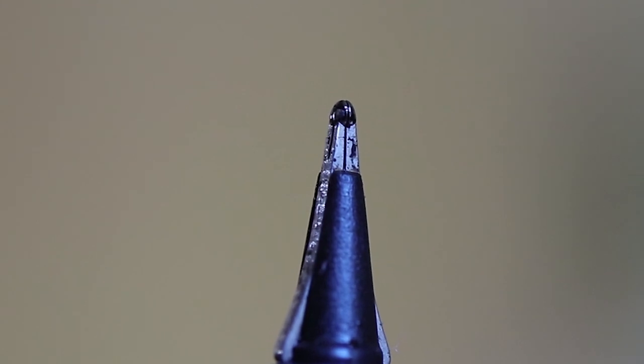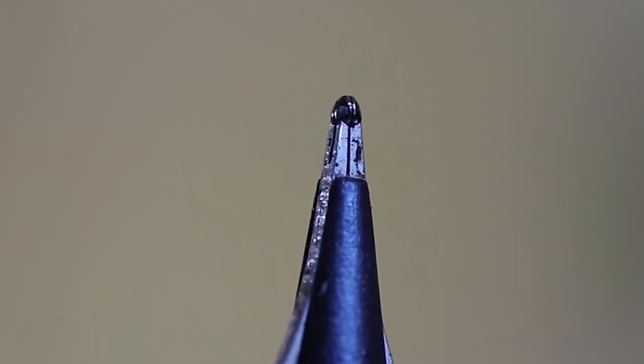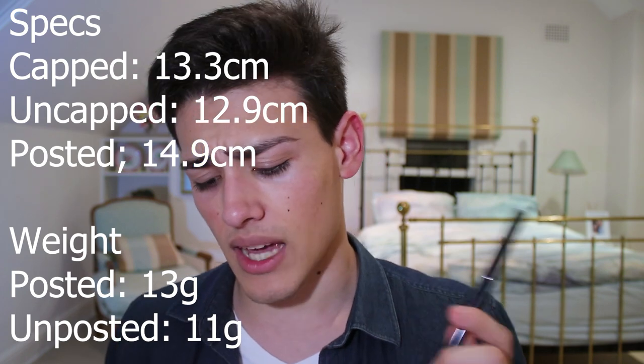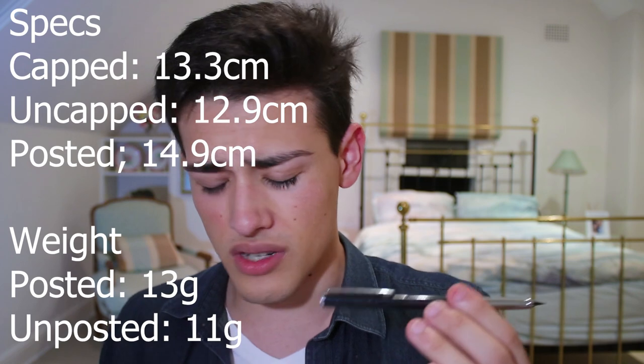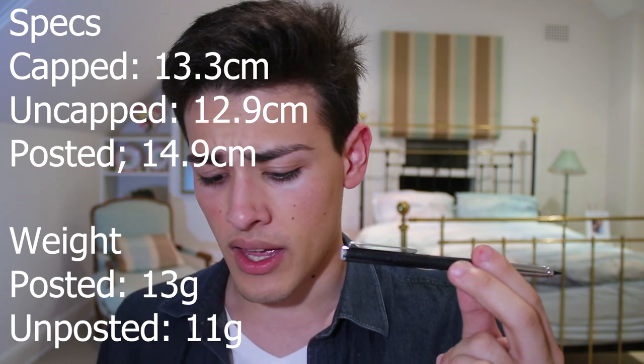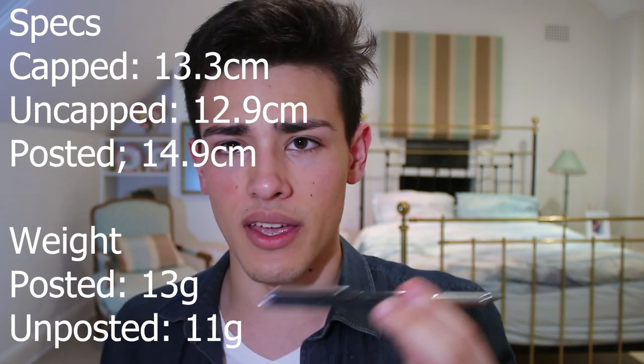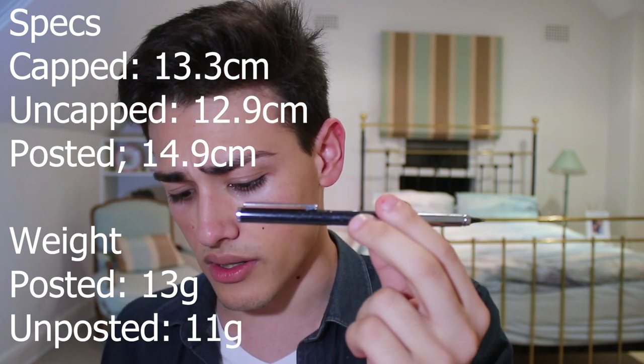Now before we get into the writing and everything like that, let me quickly walk you through the specs and ergonomics. So capped, this fountain pen is 13.3 centimeters long. Uncapped it's 12.9 centimeters long, and posted it's 14.9 centimeters long. And this is a very light pen even though it is steel bodied.